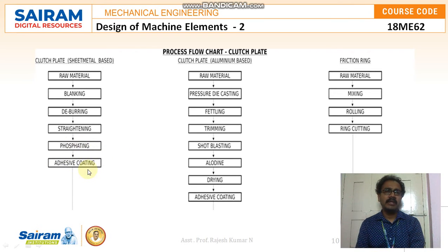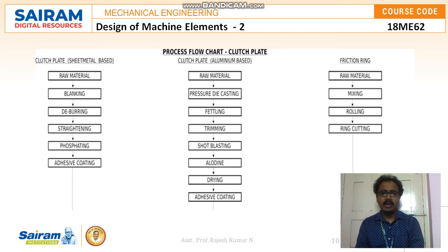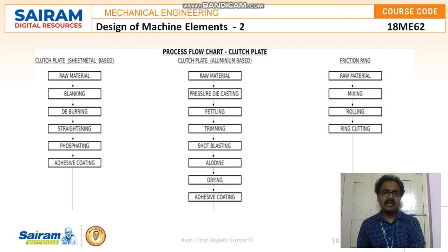After straightening, we proceed with phosphating and adhesive coating to make sure the friction material is properly fixed to the base material. Moving to the second type — the aluminium based clutch plate — we are specific to aluminium alloys here. The raw material is processed using pressure die casting. Afterwards, we go with fettling, trimming, and shot blasting to fulfill all the clutch plate requirements, followed by the aludine method, drying, and adhesive coating.